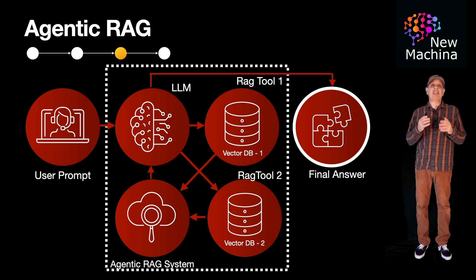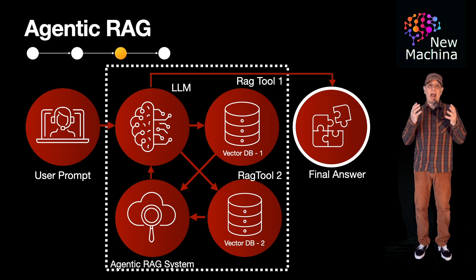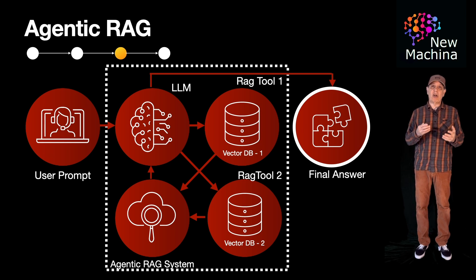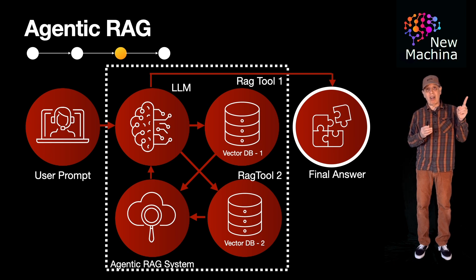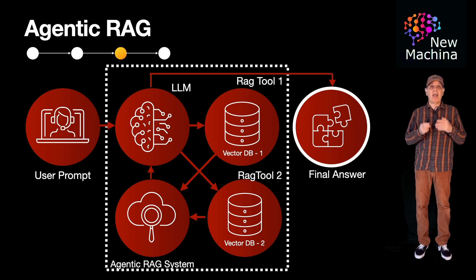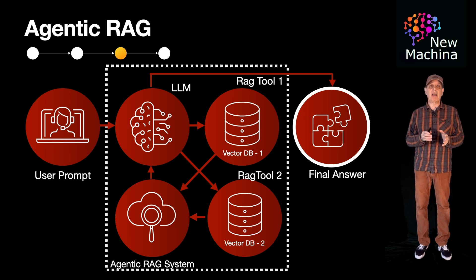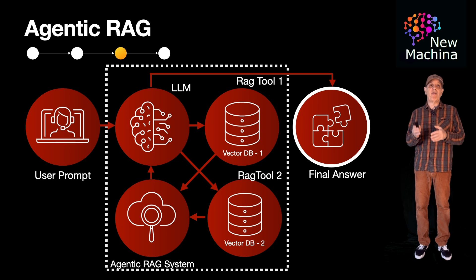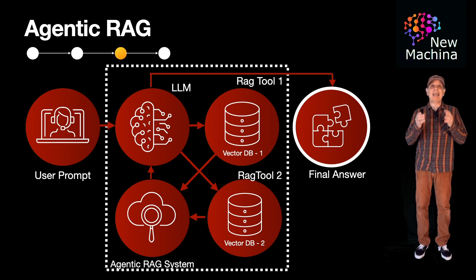So how is agentic RAG better than traditional RAG? The first reason is that agentic RAG transforms the vector database retrieval from a one-shot step into an interactive, potentially multi-step process. The second reason is that it leverages the LLM's ability to reason in a step-by-step manner and adapts its vector database retrieval strategy dynamically.